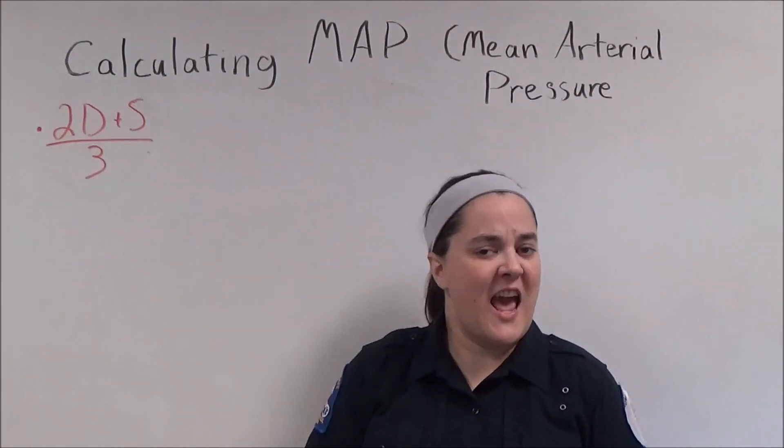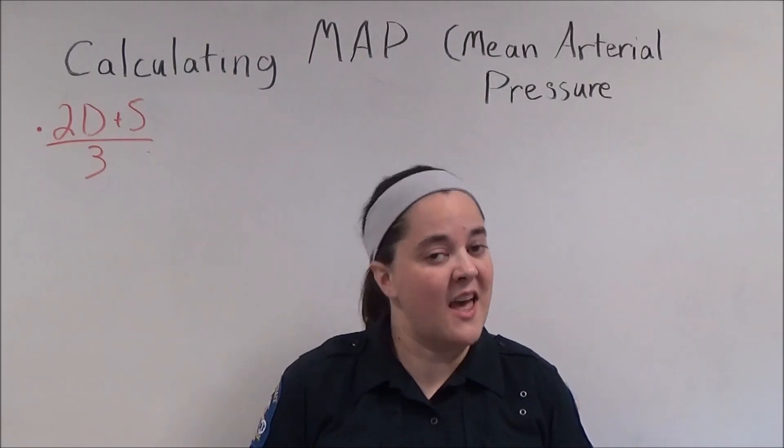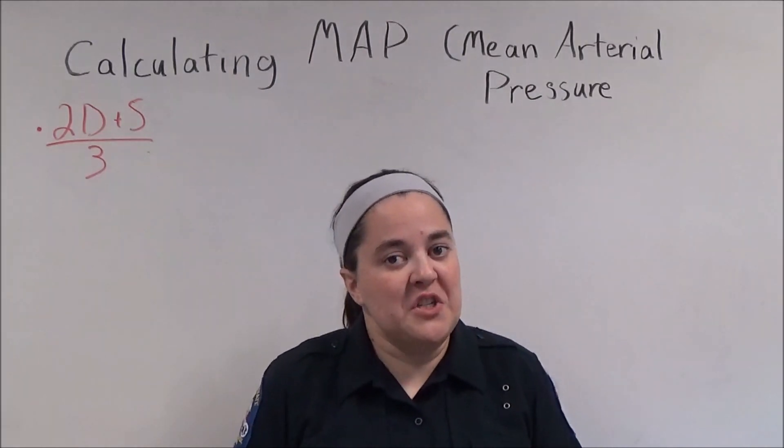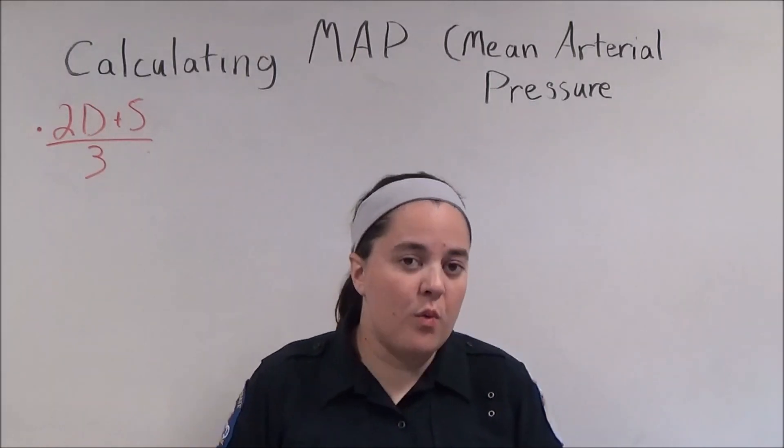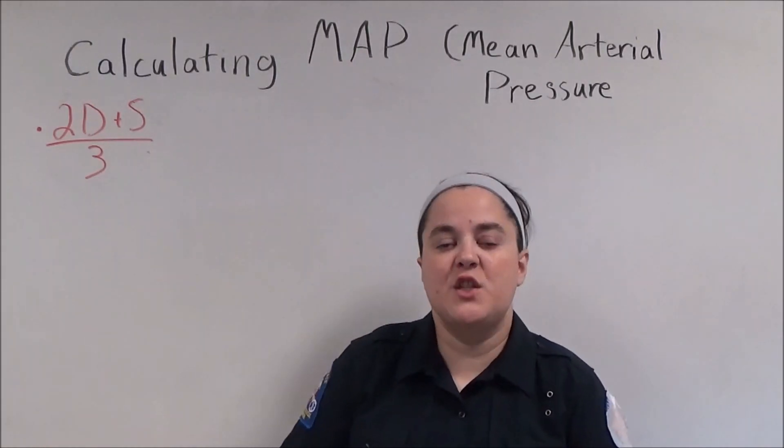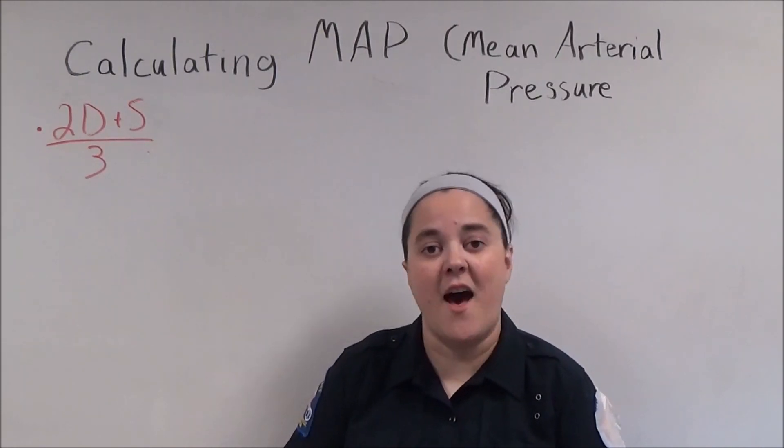So, if the MAP is just an average, why can't we just add the diastolic and the systolic together and then divide by 2? That'd make it easier, right? Well, we could do that if the patient's blood pressure could be graphically represented as a rectangle, but it's not, it's a curve.